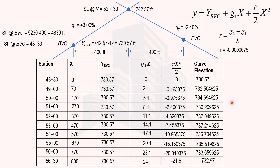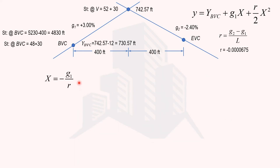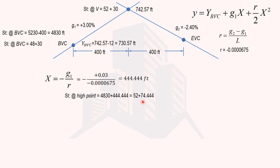The maximum curve elevation in the table occurs at station 53+00, but this may not be the exact high point. To find the high point, we use the formula x_high = −g1 / r. Substituting the values gives x = 444.44 feet from BVC. Adding this to the BVC station of 48+30, the stationing of the high point is 52+74.44.